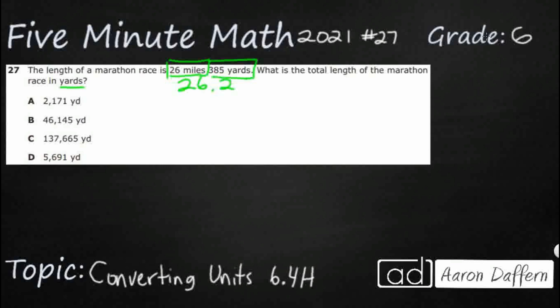So we need to turn all of this into yards. Nice thing is, the second measurement is already in yards. So we need to take our 26 miles, we're going to change this into yards, and then we need to add our 385 yards. So really the only thing we need to do is to change our 26 miles into yards.